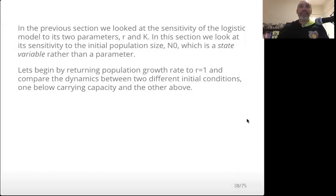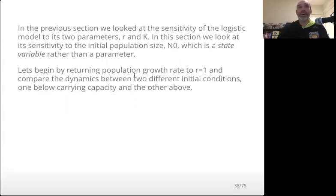In this video, we're going to dive into the sensitivity of this model to its initial conditions. In the logistic model there are two parameters, r and k, while n at time zero is what we're going to call the state variable rather than a parameter. I'm going to start by returning the population growth rate to one that gives a nice stable equilibrium and compare the dynamics as we change the initial conditions.